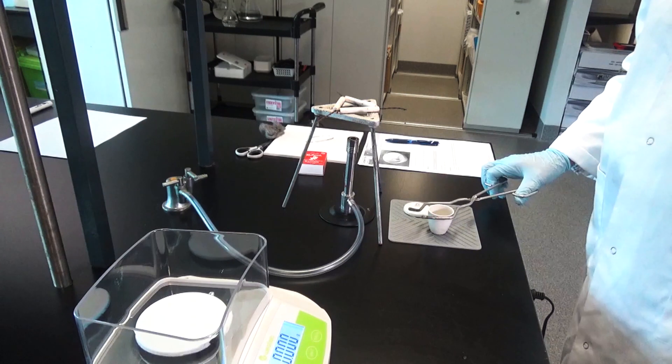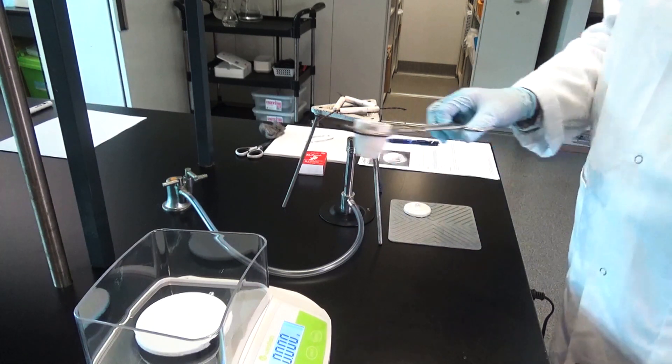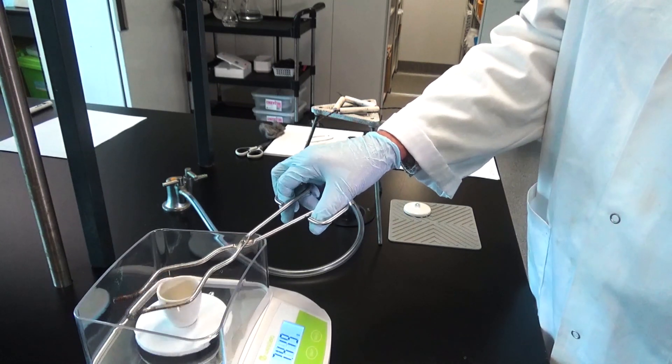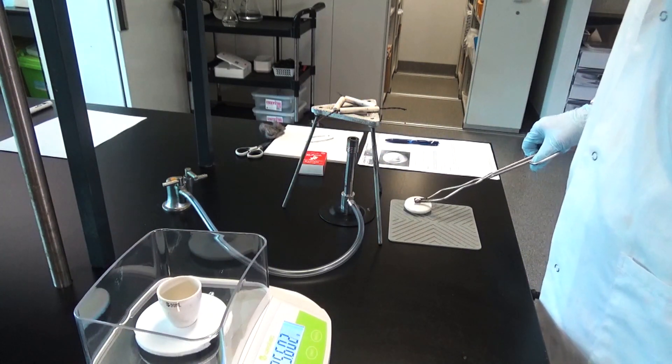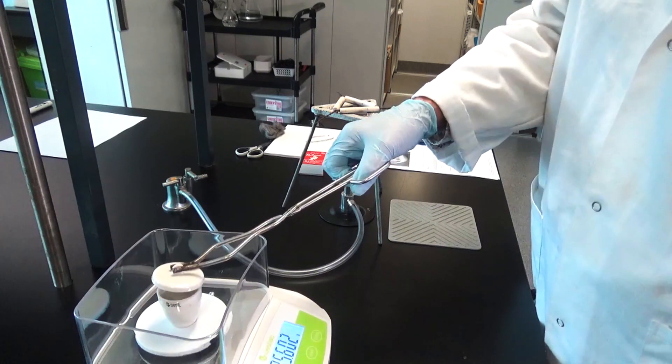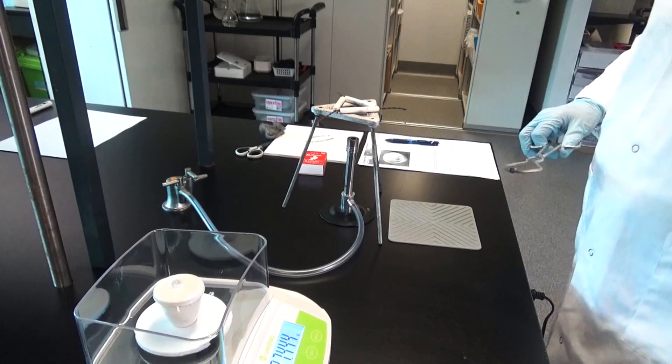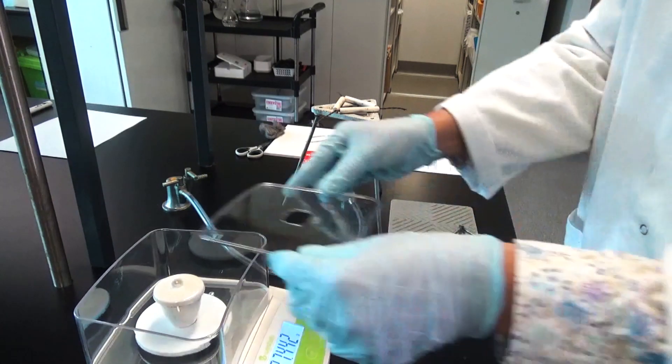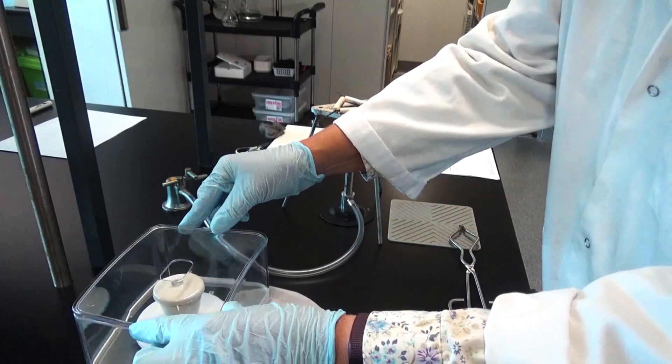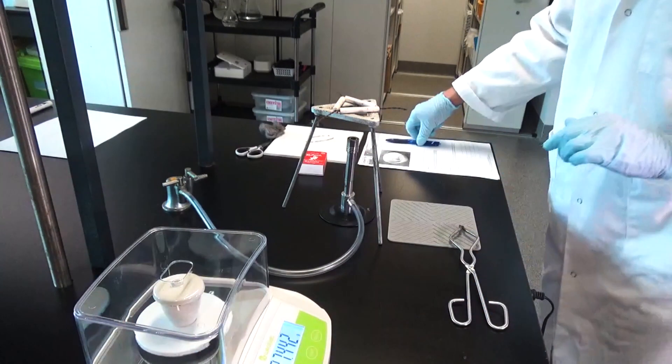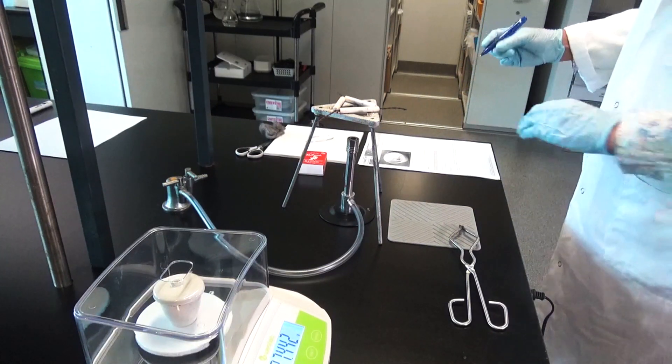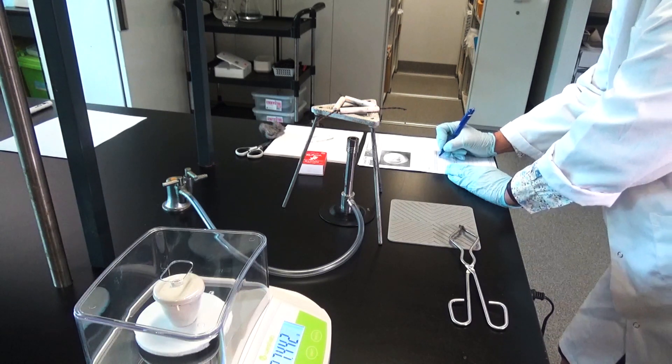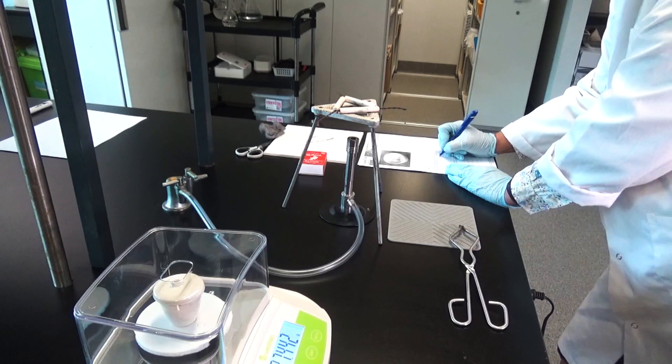Right, so now we're going to get the mass of the crucible. Our balance is set up to record to three decimal places. I'm going to have the lid as well in this crucible. I'll put this on so that we've got no air flow affecting the results. The crucible and the lid together is 37.442 grams.